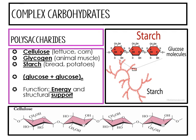Another important complex carbohydrate is polysaccharides. Polysaccharides are very complex and really long. Cellulose, glycogen, and starch are examples. Cellulose is in lettuce and corn, glycogen is in animal muscle, and starch is in bread and potatoes. The basic formula for a polysaccharide is glucose plus glucose repeated — 75, 216, or any number of chains of glucose plus glucose. Their function is to serve as energy and structural support.